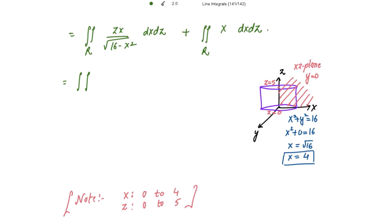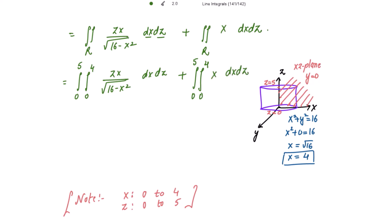So the integral is: double integral from x = 0 to 4, z = 0 to 5 of zx / √(16 − x²) dx dz, plus double integral from x = 0 to 4, z = 0 to 5 of x dx dz. We integrate with respect to x first. Using the substitution 16 − x² = t for the first integral, we evaluate: z times √(16 − x²) divided by (1/2) multiplied by −(1/2), with limits from 0 to 4 for x, then dz.